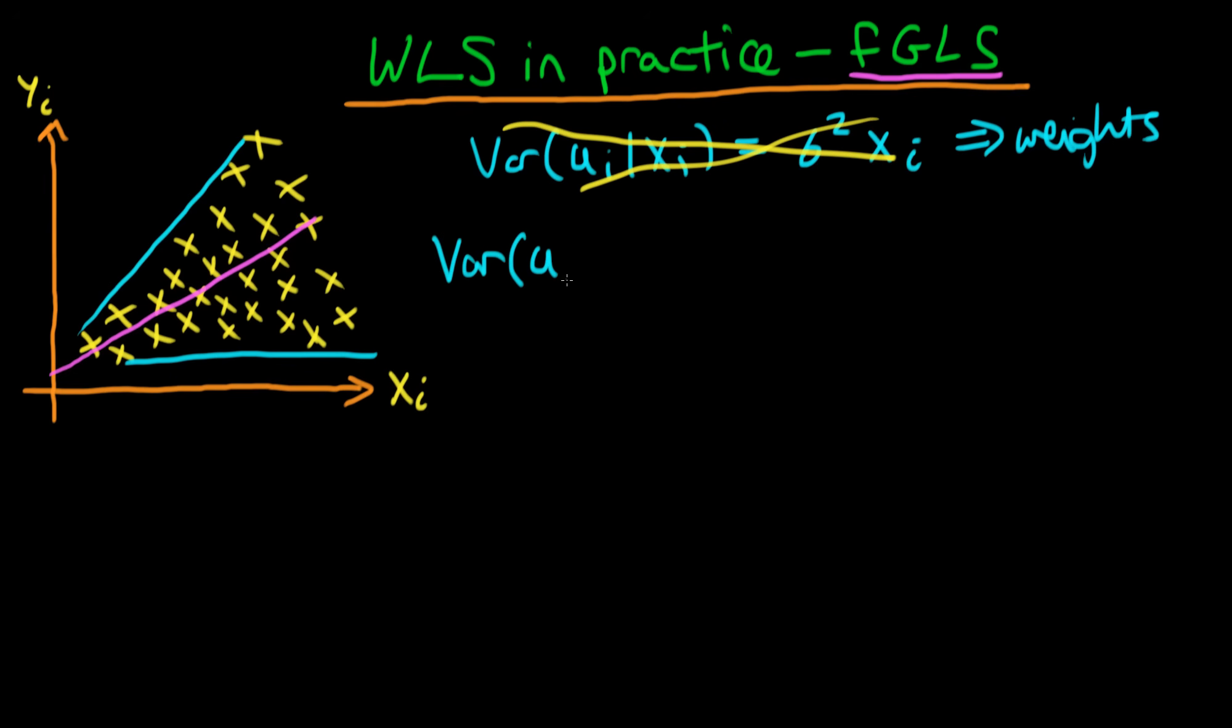The model which we specify is that the variance of ui given xi is equal to sigma squared times the exponent of a linear combination of all of our independent variables, because now we're talking about the case whereby we can have more than one right-hand side independent variable. So we've got delta_0 + delta_1 times x1i all the way up to delta_p times xpi.